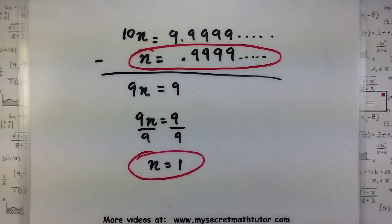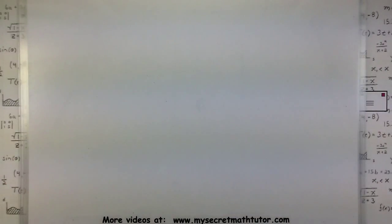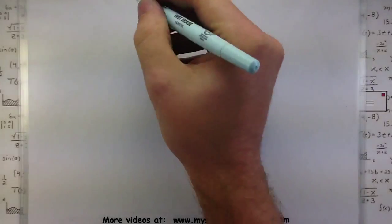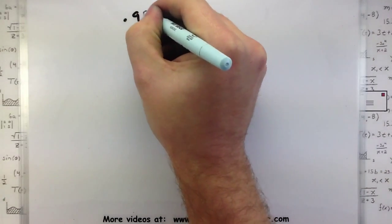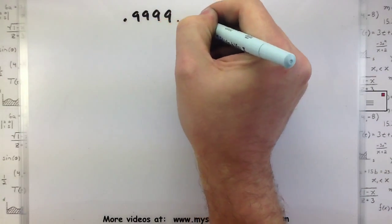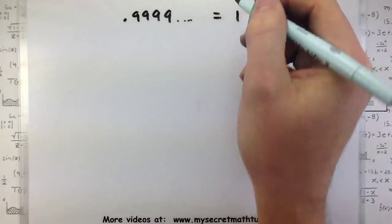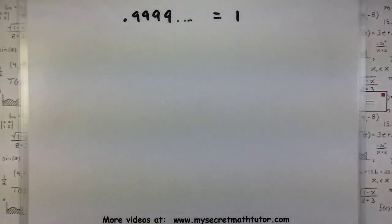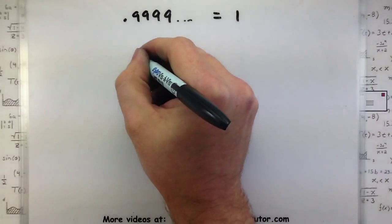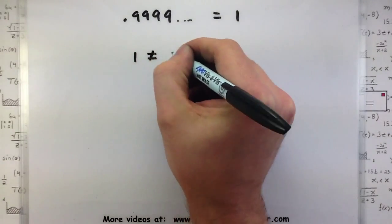Now, if you're still not convinced, that's okay. I got one more argument to sway you. For this last argument, here's how I'm going to approach it. Suppose that I have two numbers and they are not equal. For example, I know that 1 is not equal to 2.